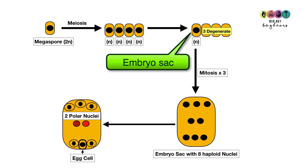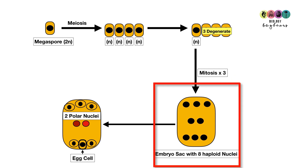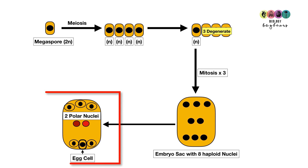The nucleus of that remaining haploid cell undergoes mitosis three times to produce an embryo sac with eight haploid nuclei. Eventually, six of these become individual cells, one of which is the egg cell, and the two remaining nuclei become the polar nuclei.